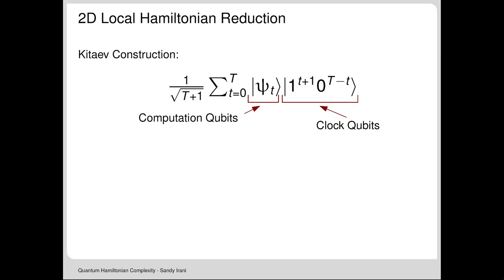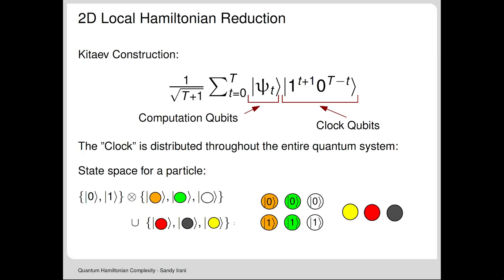In Kitaev's construction, the clock is entirely in one register and the computation in another, with no notion of spatial locality. Now we lay things out on a 2D grid. Instead of having the clock and computation in separate registers, each particle will encode a little bit of the computation and a little bit of the clock. We're distributing the clock geometrically over the Hilbert space.